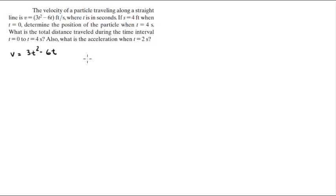If s equals 4 when t equals 0, so we're getting a nice initial condition here. Determine the position of the particle at t equals 4 seconds, total distance traveled during the time interval, and the acceleration.